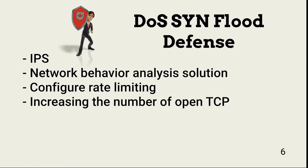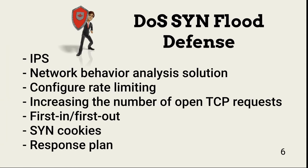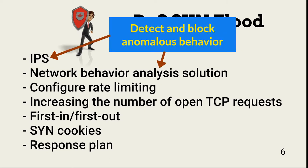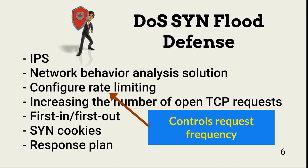Organizations can effectively defend against SYN flooding and simple denial of service attacks by performing some of the following: implementing IPS to detect and block anomalous behavior, implementing a network behavior analysis solution, and configuring rate limiting on devices that support them. Rate limiting controls the frequency of requests allowed on OSI layers 4 and 5.